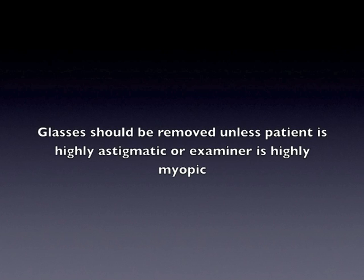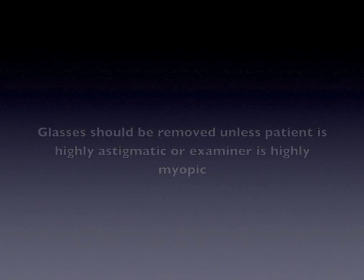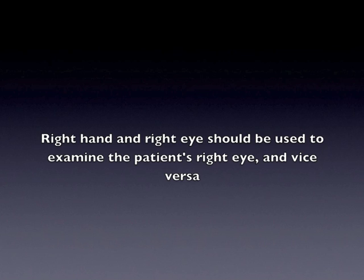The patient's glasses should be removed unless highly astigmatic, and the observer should remove glasses unless highly myopic. This allows the ophthalmoscope to be held as close as possible to the observer's eye. When examining the patient's right eye, the observer should hold the ophthalmoscope in his right hand with the right forefinger controlling the dial, and vice versa for when examining the left eye.